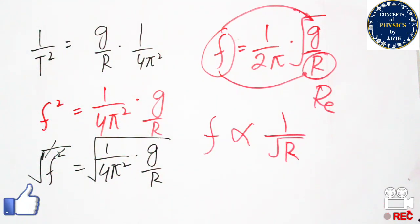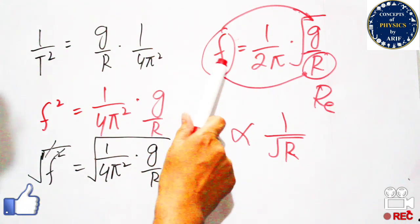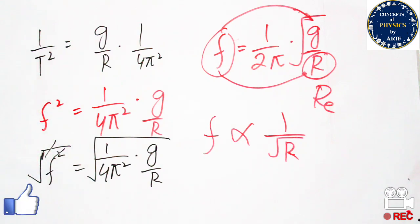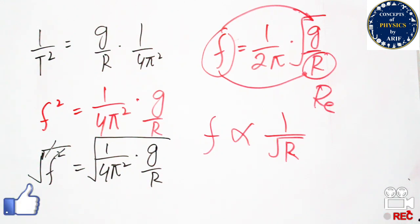To conclude: frequency has a direct relation with gravitational force and an inverse relation with the radius. We have finished discussing artificial gravity, its parameters, how it can be generated, and why it needs to be generated — to overcome the physiological problems astronauts face in zero gravity. After generating the appropriate rotation frequency, astronauts can work well and their performance can be increased.